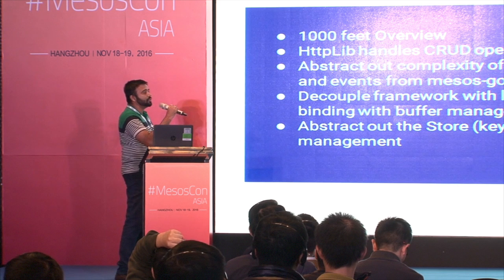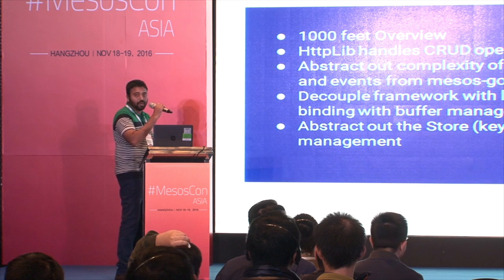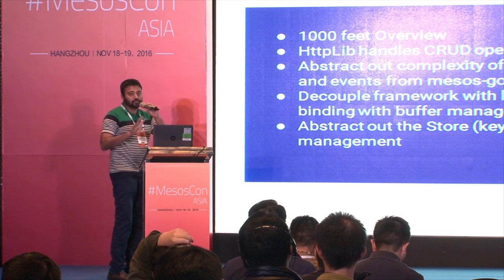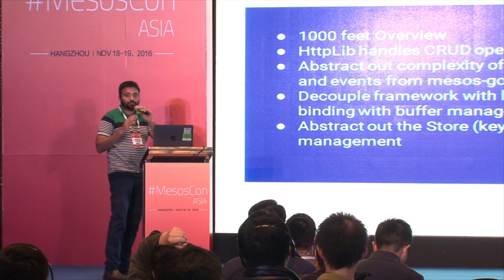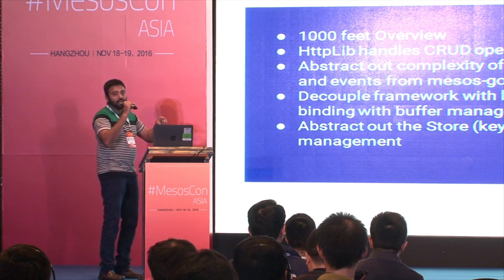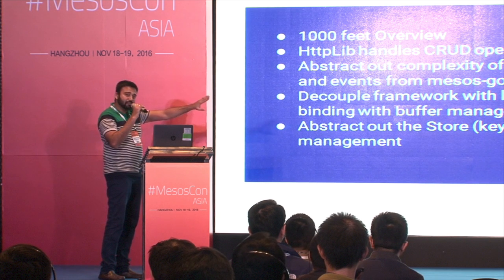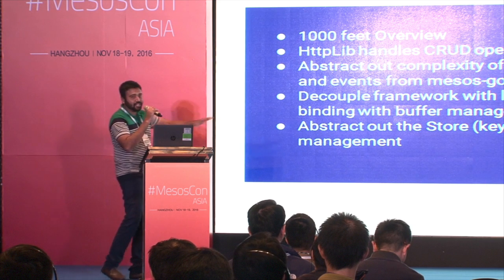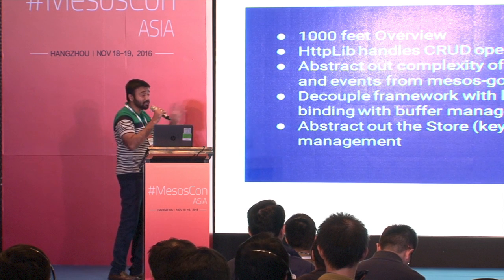For the HTTP library, we use the Echo framework. Tomorrow we can change it to a better HTTP package in Go, and your code will not be affected at all. Mesos Go is also waiting for an upgrade to support Mesos 2.0 APIs. Once we get that, whatever changes are made will be part of the Mesos lib, and frameworks written on top of this abstraction will not be affected — those code changes won't hamper your framework.